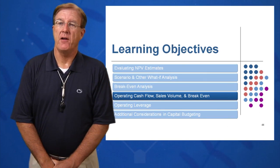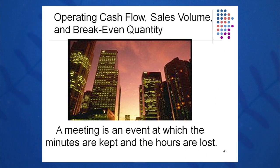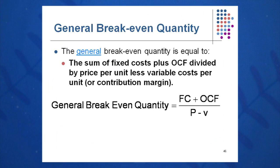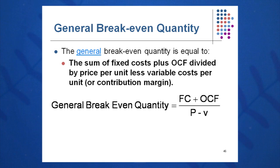The fourth learning objective regards OCF and sales volume and breakeven. We'll look at breakeven quantity — how we calculate it — the general breakeven quantity, accounting breakeven quantity, and how OCF (operating cash flow) enters into the equation. The general breakeven quantity is derived from taking an income statement and solving for Q (quantity): fixed cost plus OCF over P minus V. P minus V is price minus variable cost, which is contribution margin.